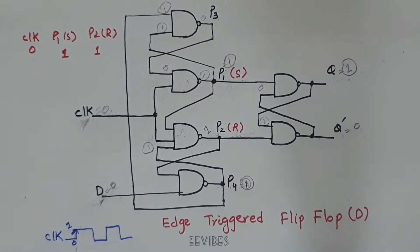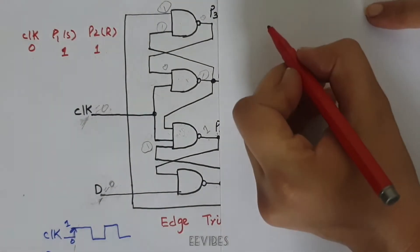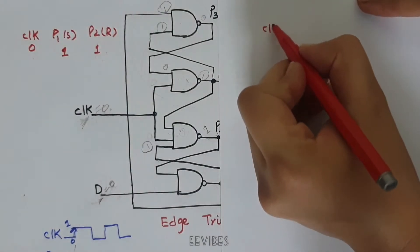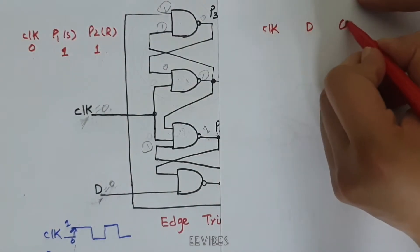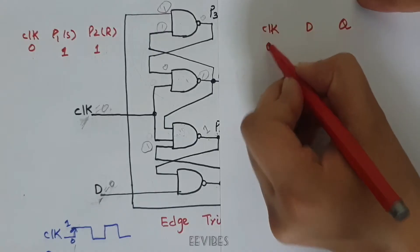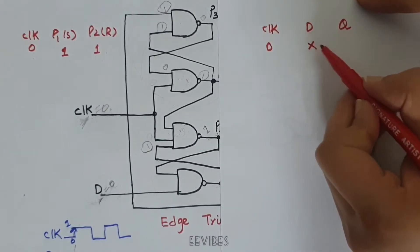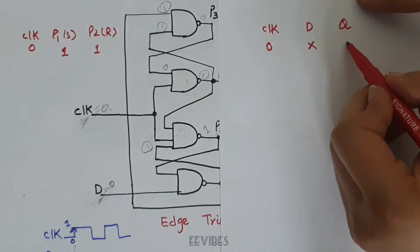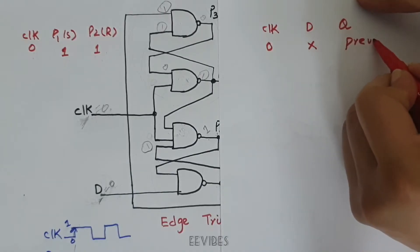If you draw the truth table for this D flip-flop, you can see that here is the clock signal, here is the input D, and here is the output. As long as the clock is equal to 0, you don't care about the value of D — the output remains in the previous state.